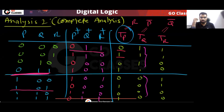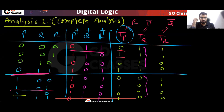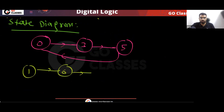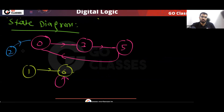From 1 you go to 6. From 6 you go to 6, because all bits are zero-zero-zero, so it is unchanged — from 6 you stay at 6. From 2 you go to 0. From 4 you go to 5, and from 7 you also go to 5.